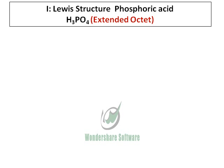I'm going to do the Lewis structure for phosphoric acid. Phosphoric acid is a special compound — it has two types of Lewis structure. The first one I'm going to do is the one which has an extended octet.